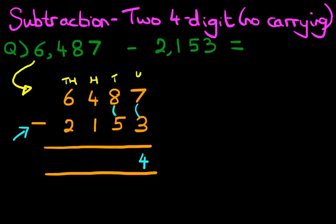The tens column. What is 8 minus 5? 8 minus 5. That's right. The answer is 3. The hundreds column. 4 minus 1. 4 minus 1. That's right. It is 3.